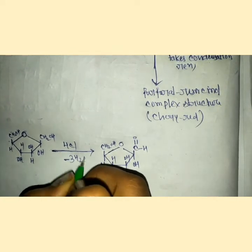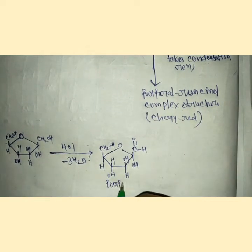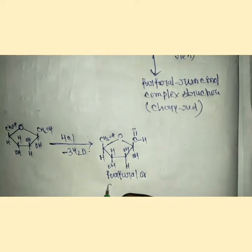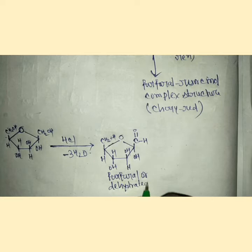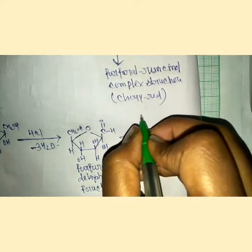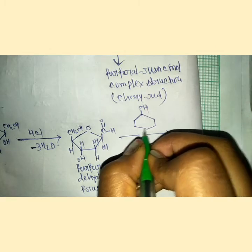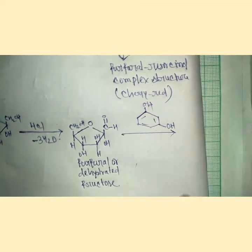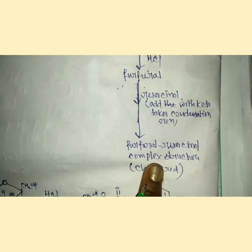The keto group is responsible in this type of test, so fructose is converted into furfural. Let me write the structure of furfural. This is furfural, with 3 H2O going out, so we can say furfural or dehydrated fructose.